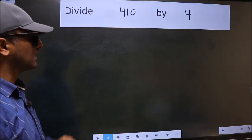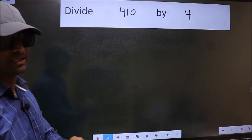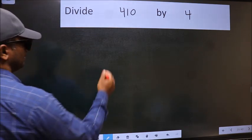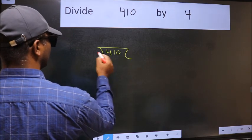Divide 410 by 4. To do this division, we should frame it in this way: 410 and 4 here.